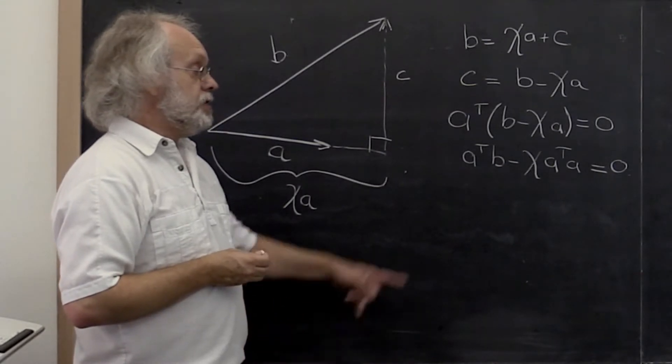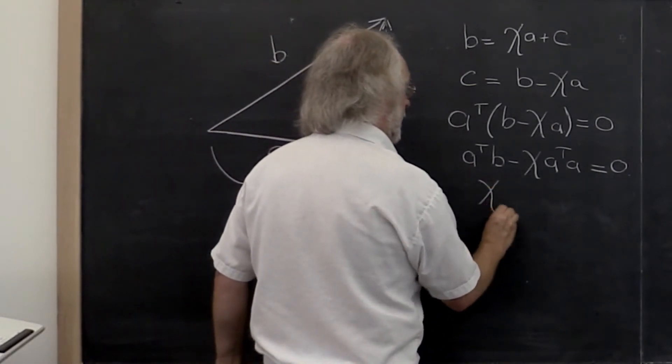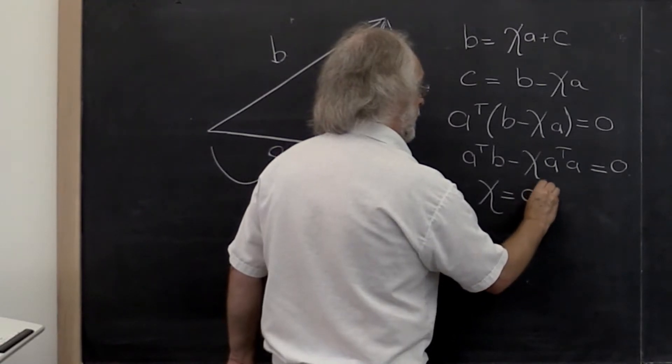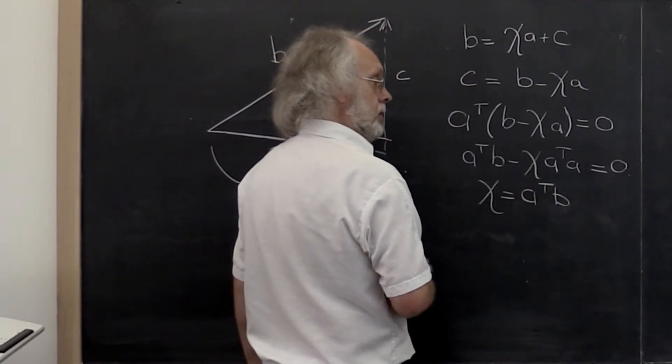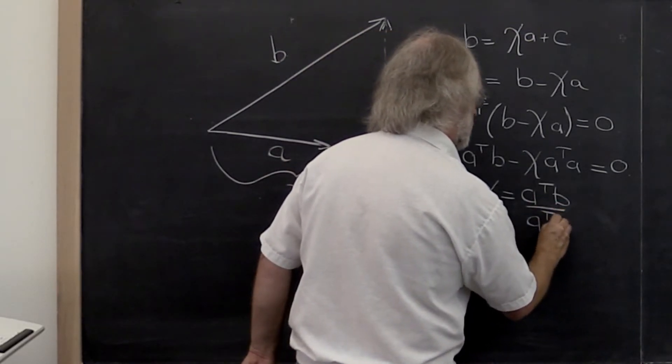And if we then solve for chi, we find that chi is equal to A dot product with B divided by A dot product with itself.